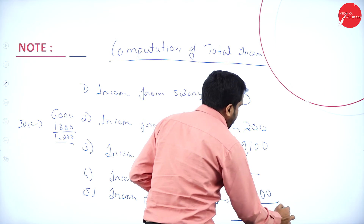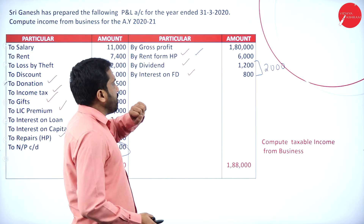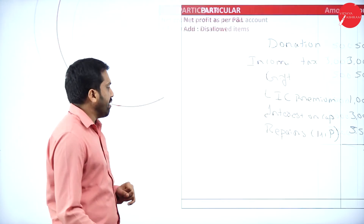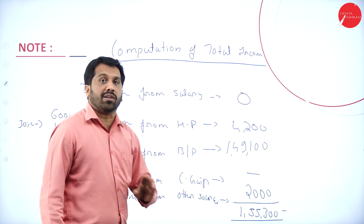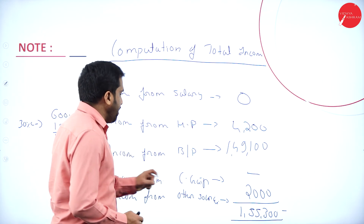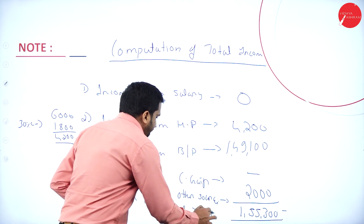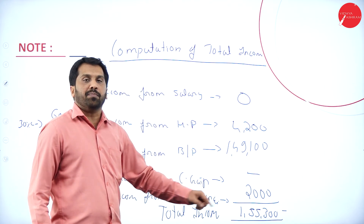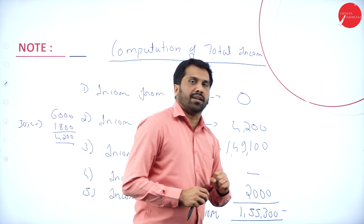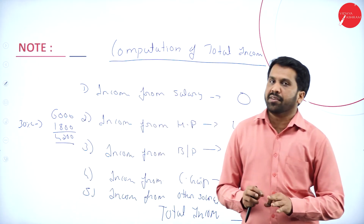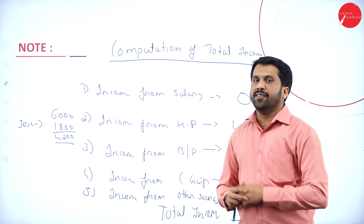Remember, the dividend of 1,200 is exempted. So this is only total income, not taxable income. While calculating taxable income, that dividend portion has to be reduced. This is called your total income — they will not ask you this in the examination, but if you want to know, write all five heads with the relevant figures.